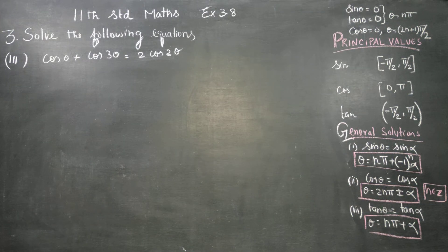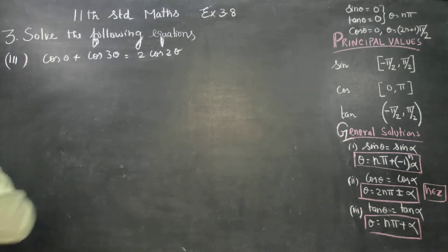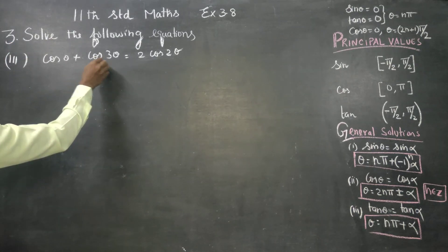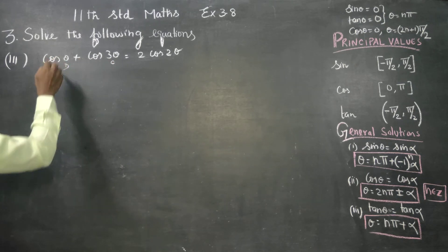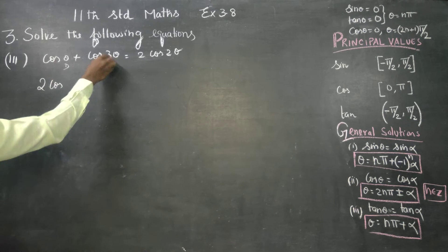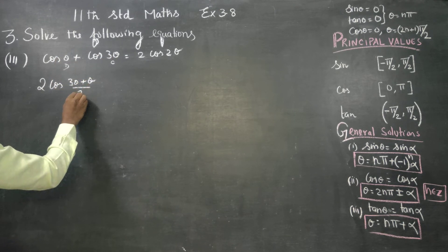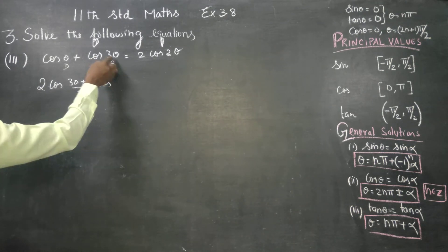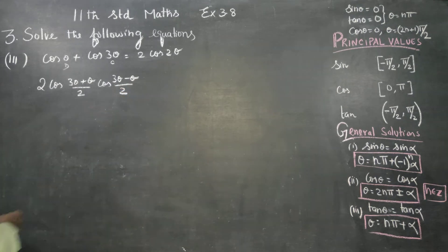Dear 11th standard students, solve the following equation — sum number 3, question x is number 3.8. I will choose this as c and this as d. The formula: cos c plus cos d equals 2 cos((c plus d)/2) cos((c minus d)/2).